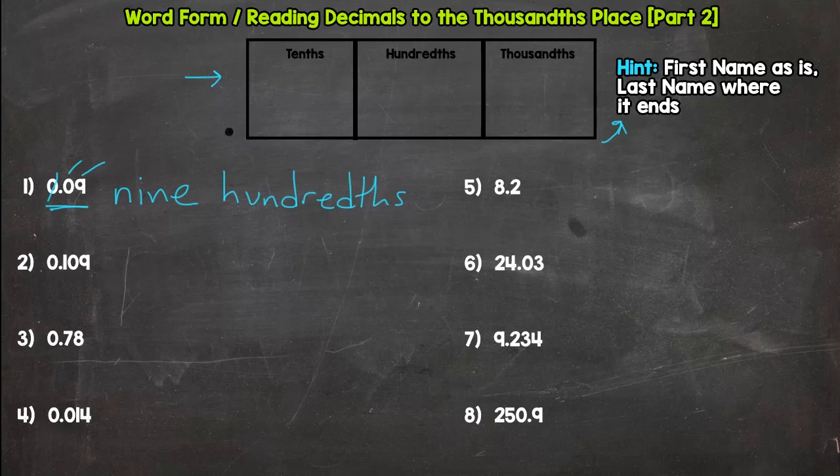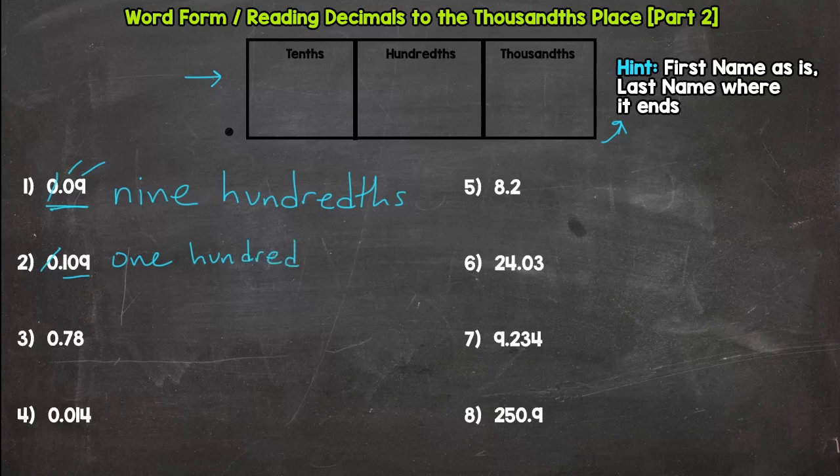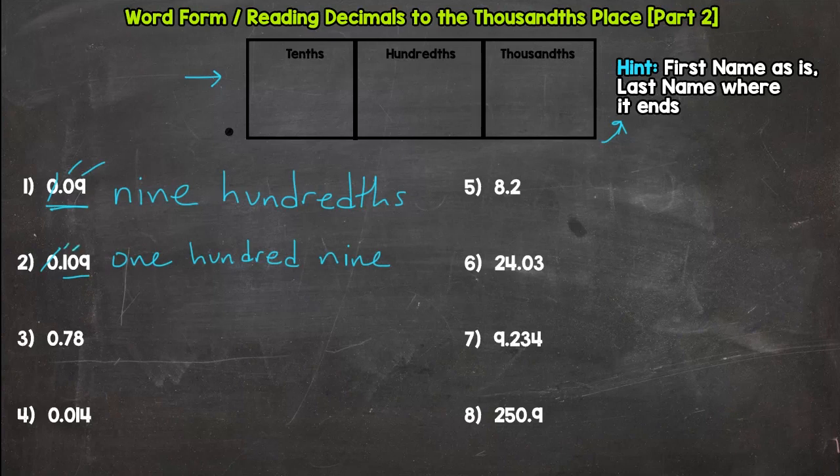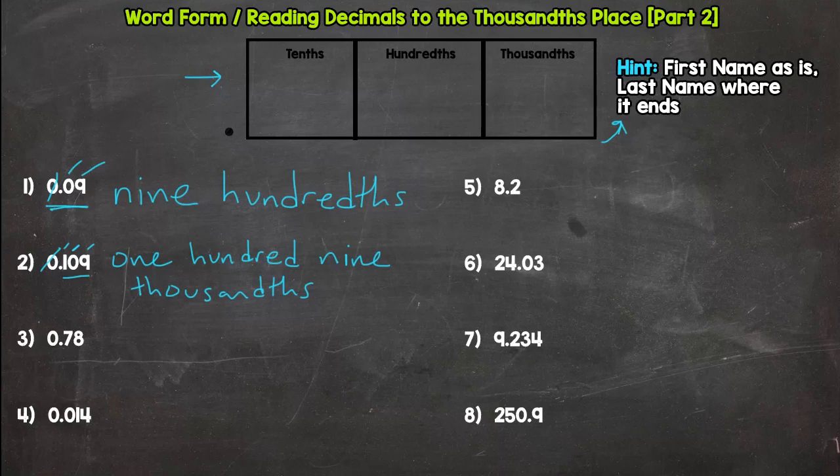Let's check out number two. Do we have any holes? Nope. So read as is. One hundred nine. And then think about what its last name would be. Where does it end? The last place value spot. Hopefully you said tenths, hundredths, thousandths. So one hundred nine thousandths. All right.